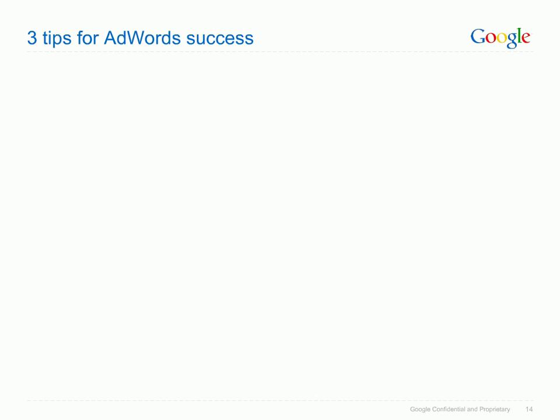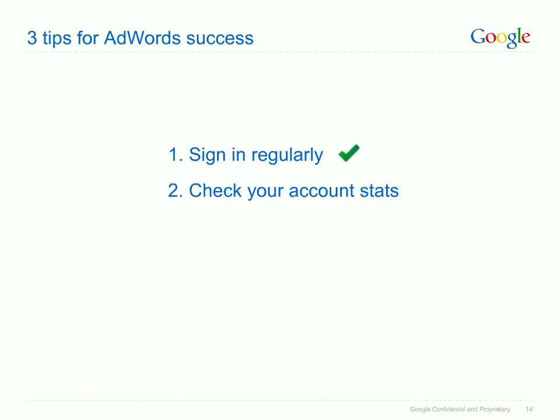Finally, we'd like to share our three tips for AdWords success with you. Firstly, to be successful with AdWords, we recommend that you visit your AdWords account on a regular basis, at least once a week. Secondly, have a look at your account stats — being aware of what works and what doesn't is the best step towards successful advertising. And third, keep tweaking and testing. The more you test, the sooner you will get the results that you're looking for.